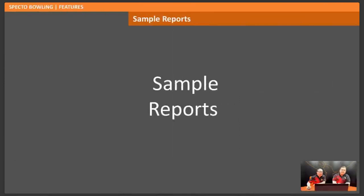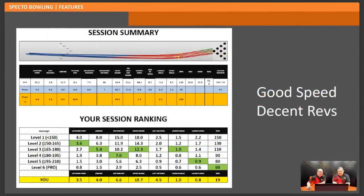Now let's go through some sample reports. The piece at the top is a picture of their ball paths. The blue, red, and green show their skid, hook, and roll phases, measured by when the ball is changing direction. SPECTO gets a reading about every foot and knows when there's any change of direction off the straight line, and when that change of direction stops — so it's actually calculating where your skid, hook, and roll phases are. That's useful when we're teaching ball motion.